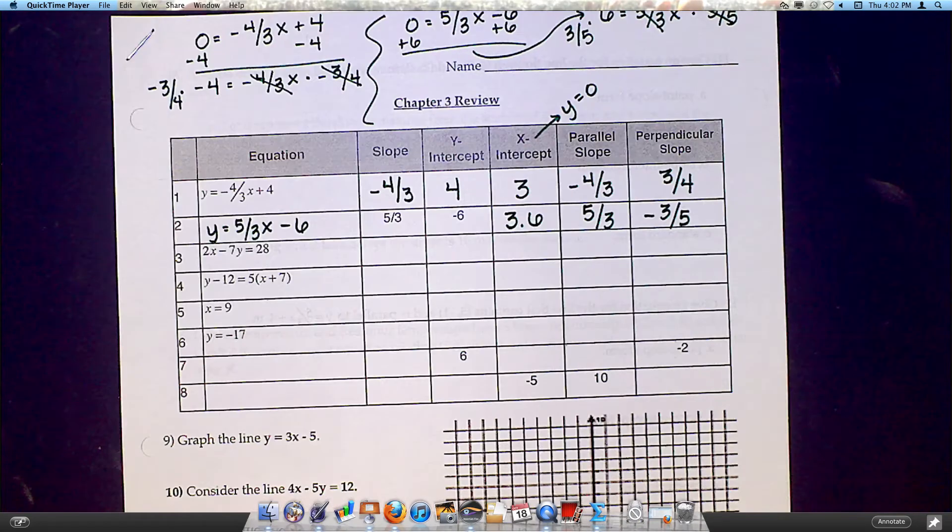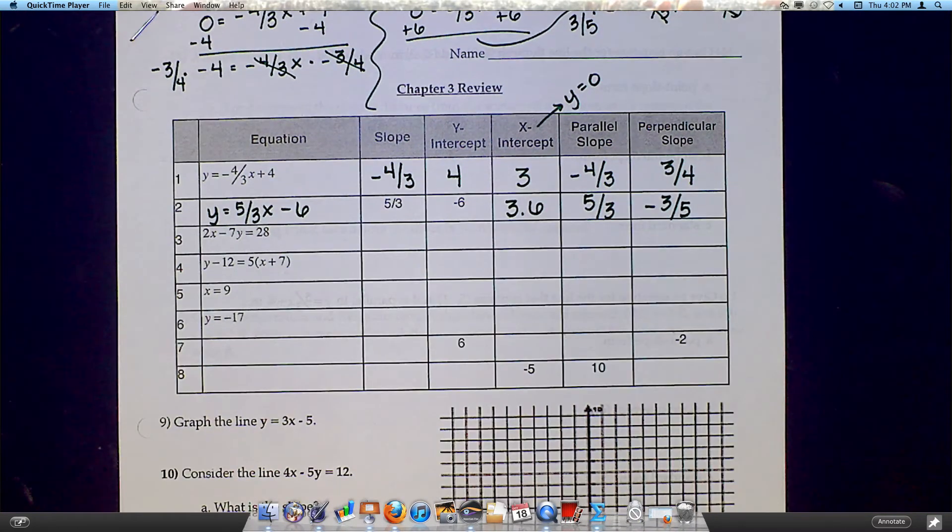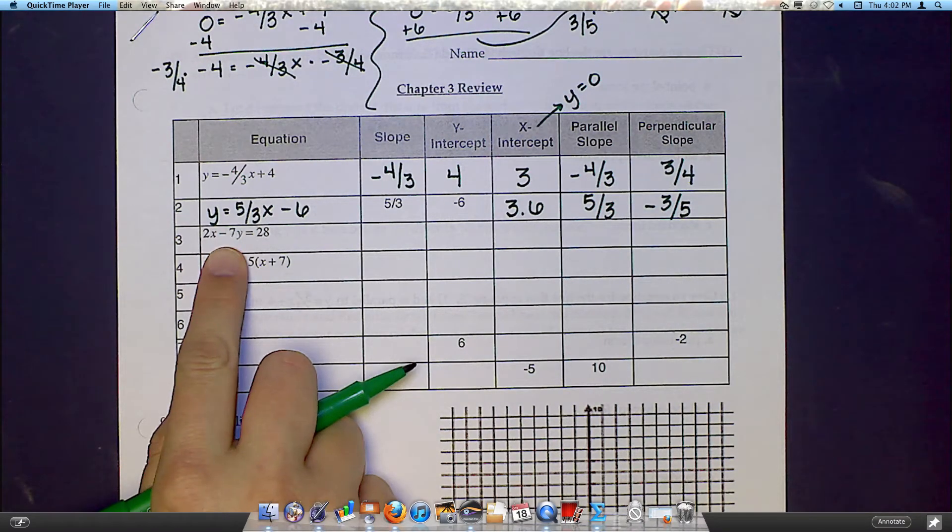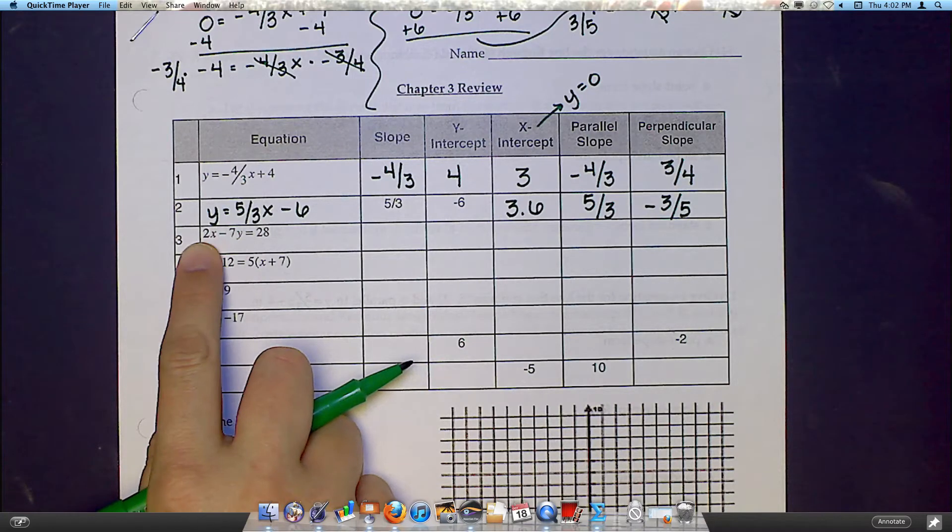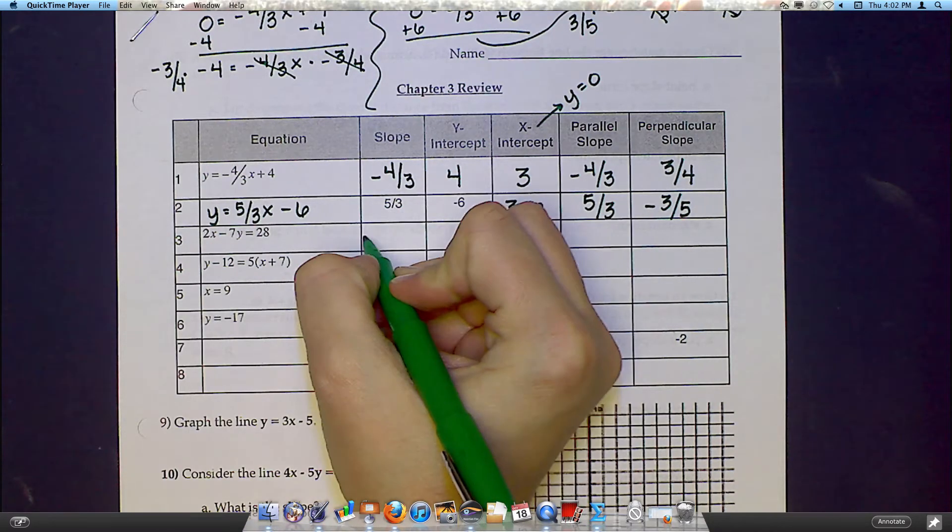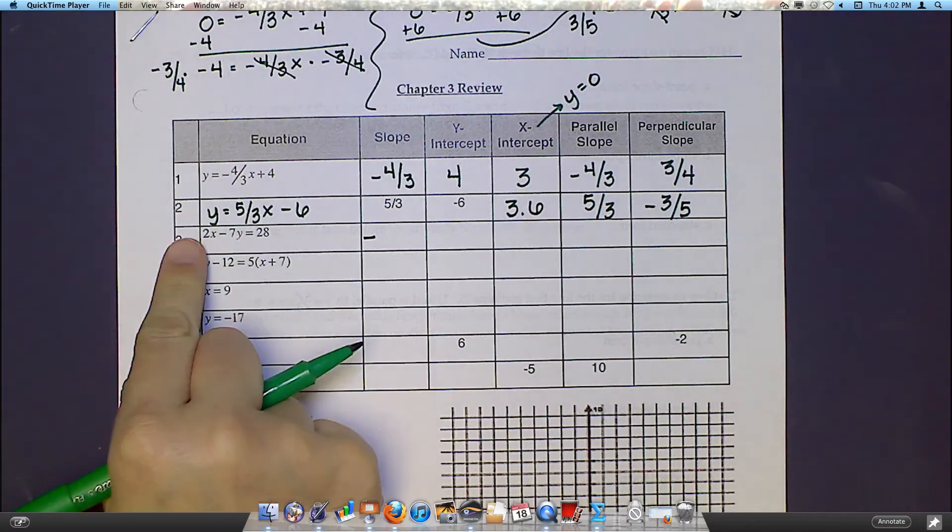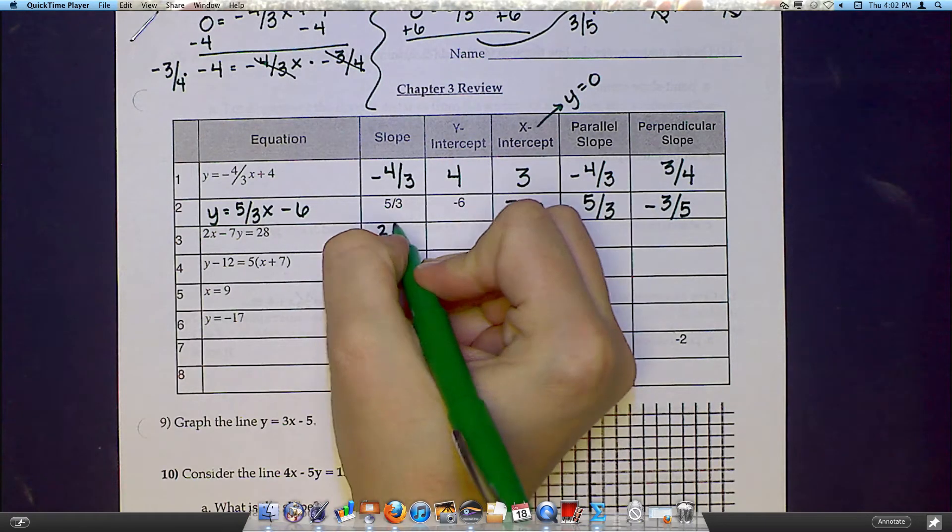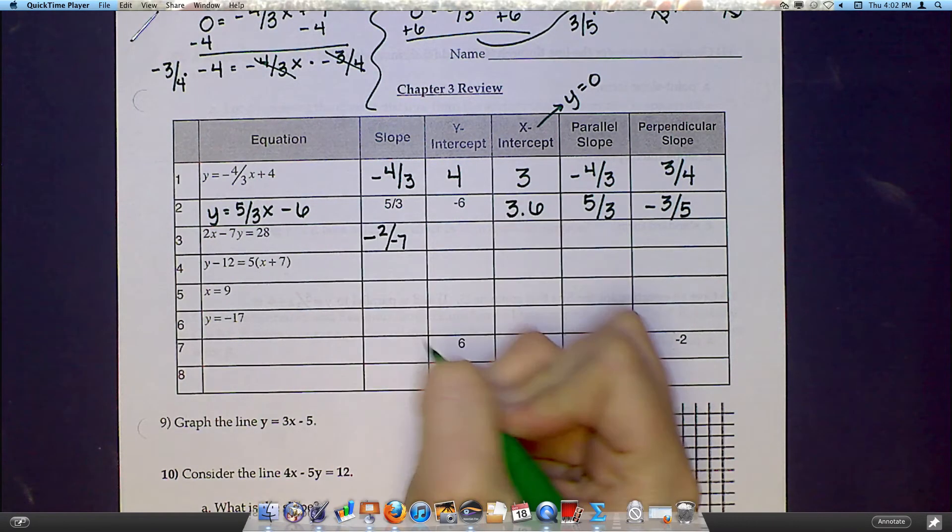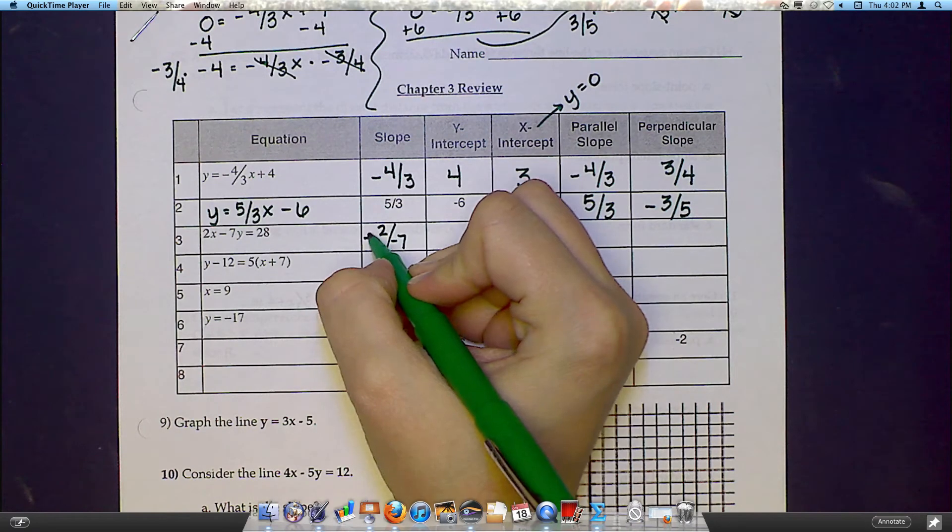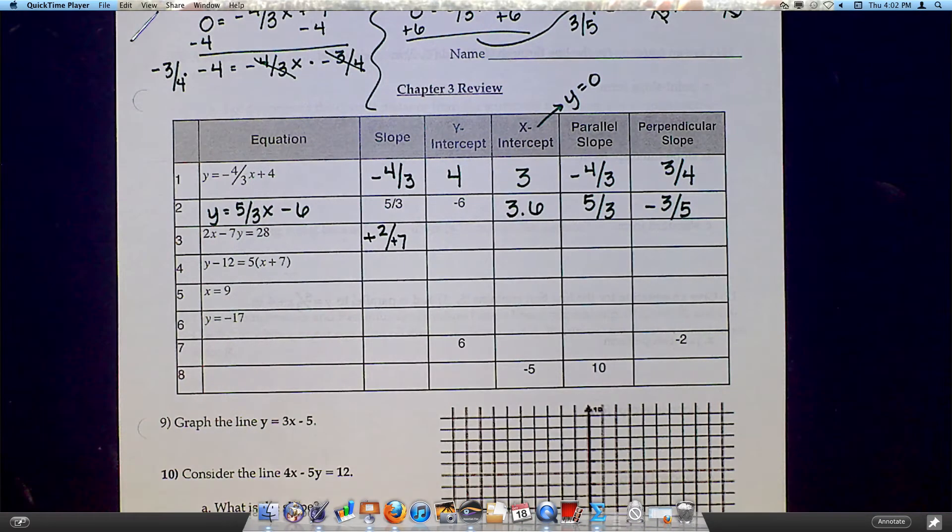Number 3 is written in standard form. To get your slope when you're in standard form, I'm going to use the negative a over b, which means it's going to be negative, and then it would be 2 over negative 7. But then, of course, your two negatives are going to cancel out, so your final answer would just be 2 over 7.